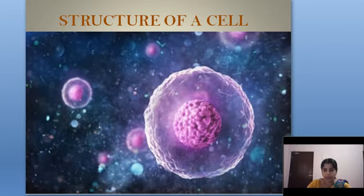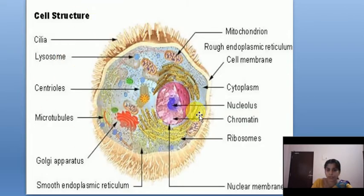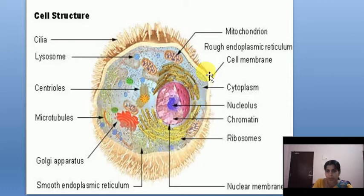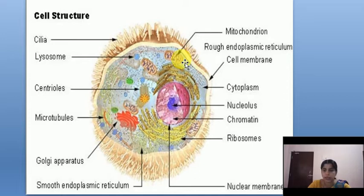So we want to know the structure of a cell — what is the structure of this basic unit, the building block of our body. This is the structure of an animal cell. There are some hair-like structures known as cilia. There is lysosome, the suicide sac, centrioles, microtubules, Golgi apparatus, smooth endoplasmic reticulum, nuclear membrane, nucleus, nucleolus, ribosomes, cell membrane, rough endoplasmic reticulum, and mitochondrion.